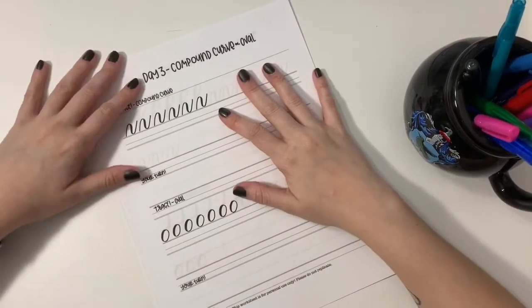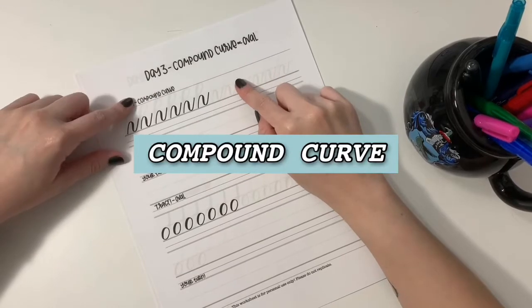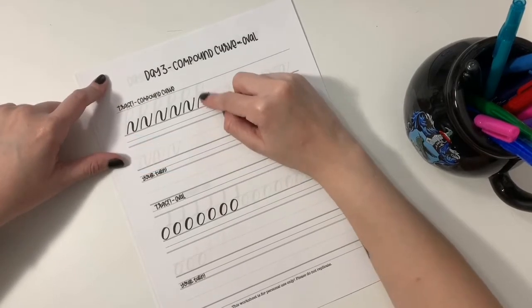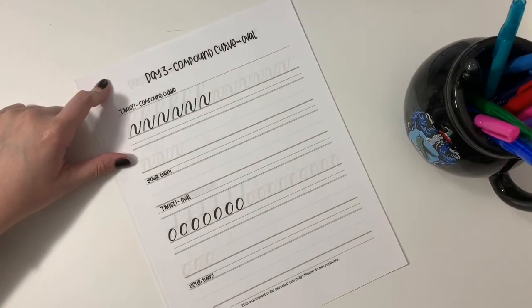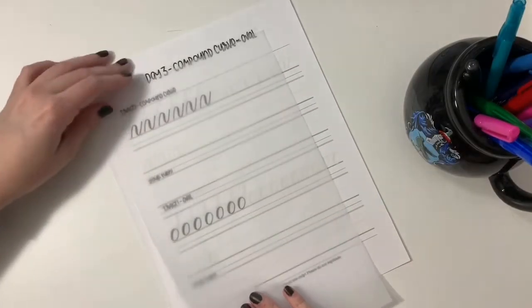Okay, so today things are getting trickier. We'll start with a compound curve which is a blend of the last two strokes we learned, the overturn and the underturn. So we've got our tracing paper right here and then we can start.